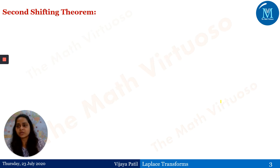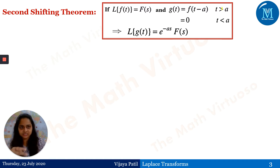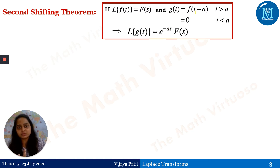What is the statement? The statement says that if the Laplace transform of f(t) is F(s), and g(t) equals f(t minus a), and this g(t) is defined over two intervals — t greater than a and t less than a — where for t less than a the value of g(t) is zero, and for t greater than a it is f(t minus a), then the Laplace of g(t) equals e to the power minus as into F(s).